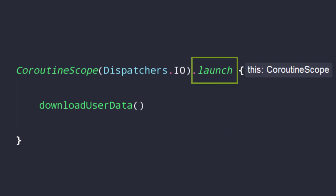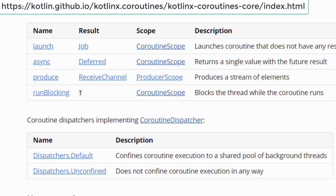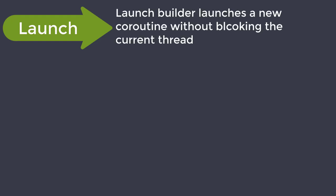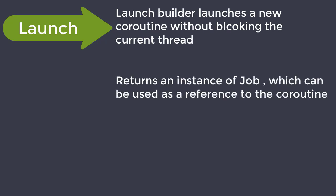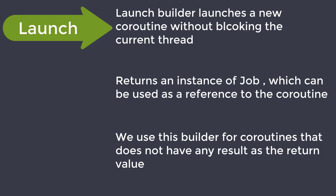Launch is the Coroutine Builder. Coroutine Builders are extension functions of Coroutine Scopes used to launch a new coroutine. There are four main Coroutine Builders: Launch, Async, Produce and RunBlocking. The Launch Coroutine Builder launches a new coroutine without blocking the current thread and returns a Job instance. We can use that Job to keep track of and cancel the coroutine. We use the Launch Builder for coroutines that do not have any result as the return value.